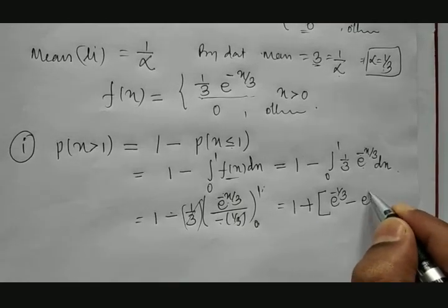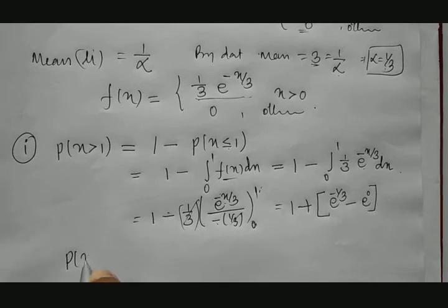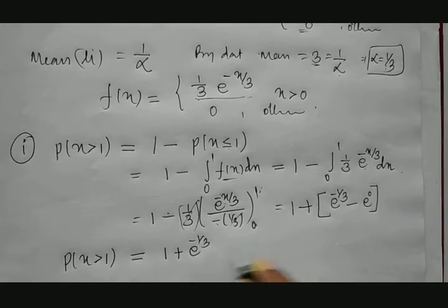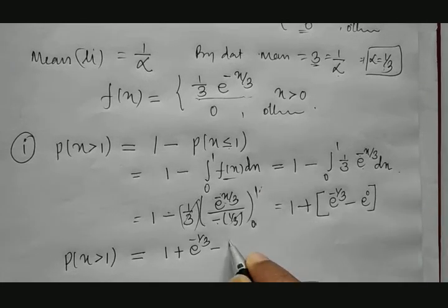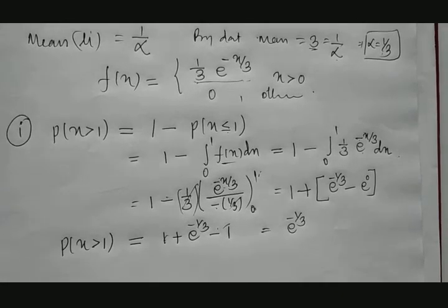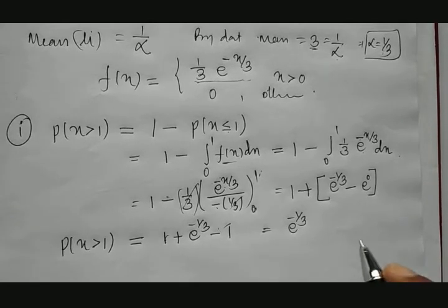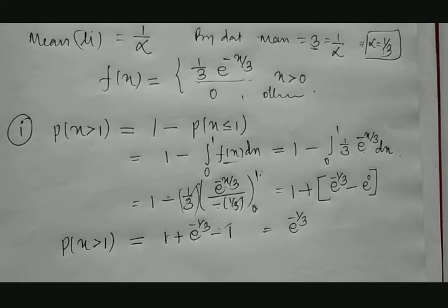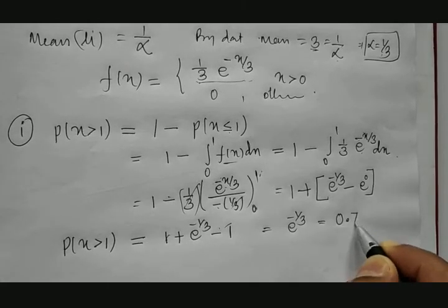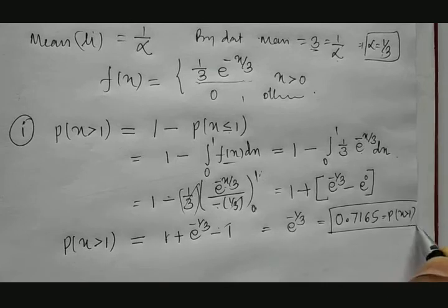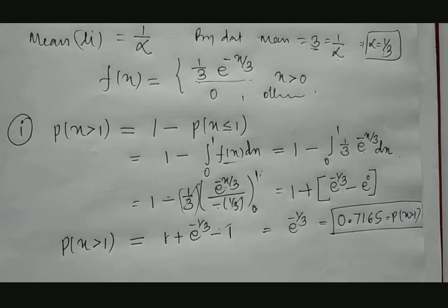For P(x > 1): using the complement rule, P(x > 1) = 1 − P(x ≤ 1). Calculating the integral from 0 to 1 of (1/3) · e^(−x/3) dx, the 1/3 terms cancel and substituting limits gives: −(e^(−1/3) − e^0) = −e^(−1/3) + 1. Therefore P(x > 1) = 1 − (1 − e^(−1/3)) = e^(−1/3) ≈ 0.7165. So the probability of x greater than 1 is 71.65%.